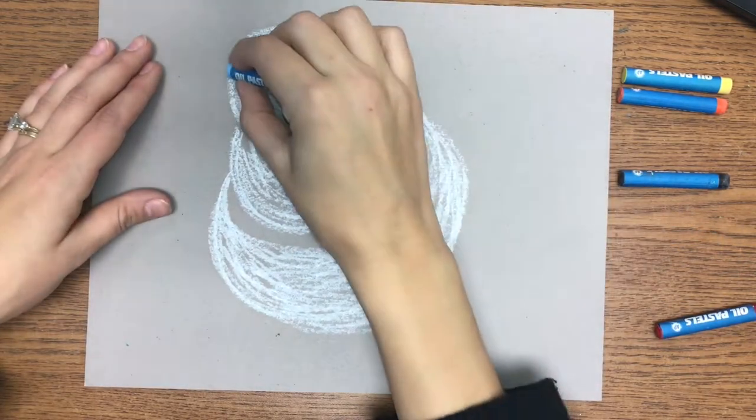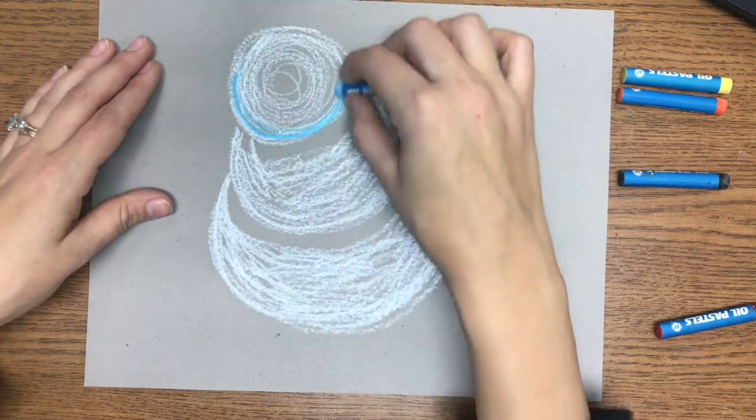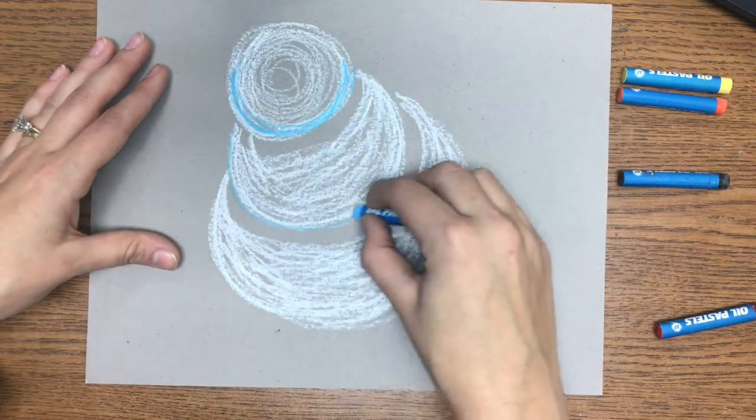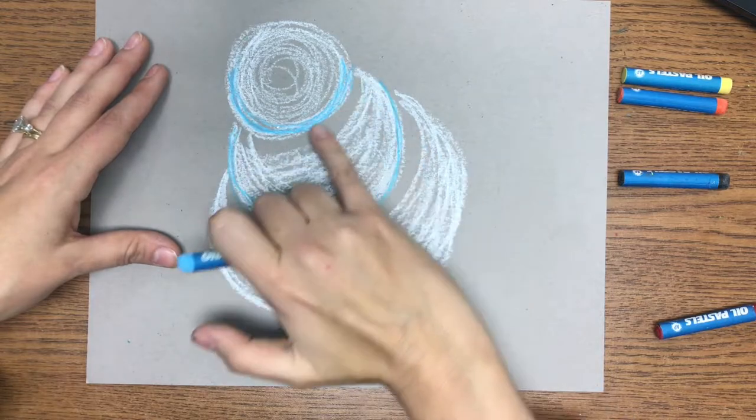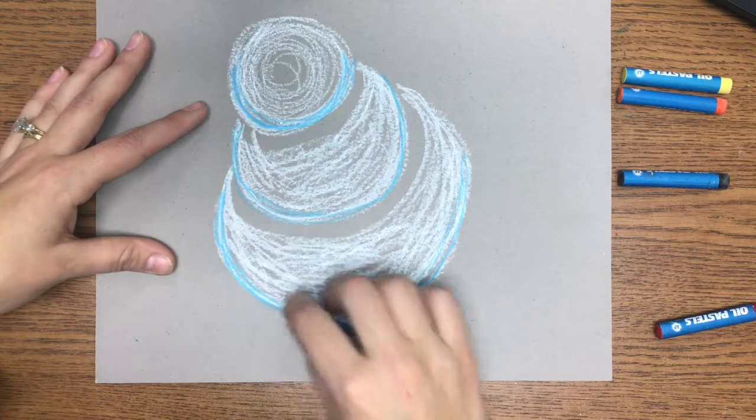Next step is to add shadows to our snowman. So we are going to use the color blue. Shadows are typically not just the color black. They usually have another color mixed in or are entirely another color. So we're going to use the color blue to make this a realistic shadow.